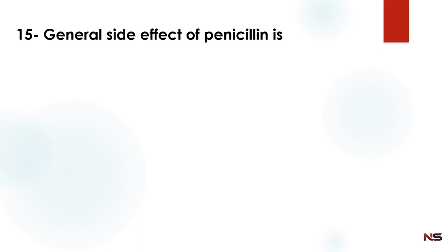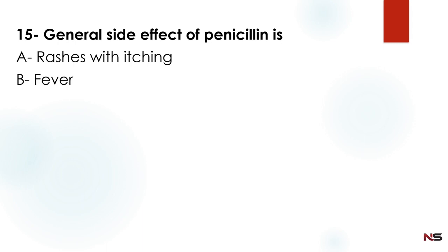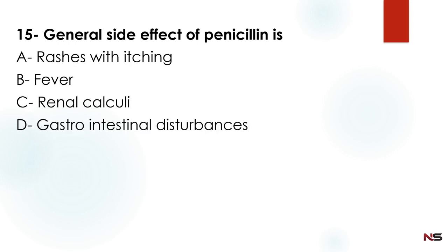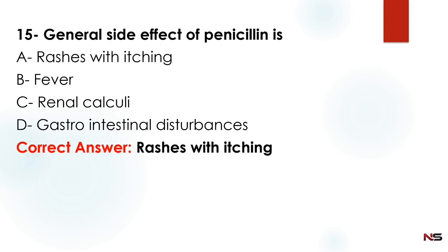The general side effect of penicillin is — Option A: rashes with itching, Option B: fever, Option C: renal calculi, Option D: gastrointestinal disturbances. The correct answer is option A — rashes with itching.